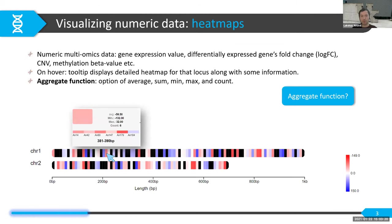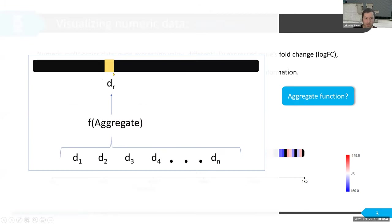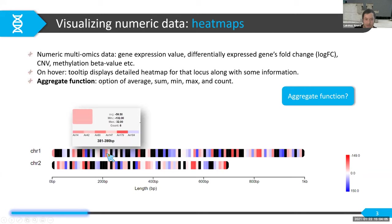For numeric data visualization — such as gene expression values, differential expression, or fold change — you can visualize as a heat map. The tooltip shows a detailed heat map for individual annotated features. There's a concept of aggregate function: for a given locus with multiple annotations each having their own data, an aggregate function generates representative data. Options include average, sum, mean, max, or count of annotations at that locus.